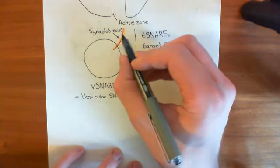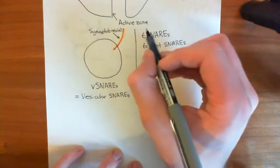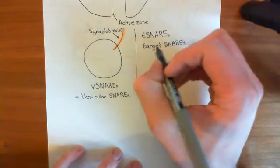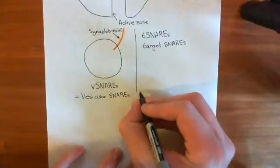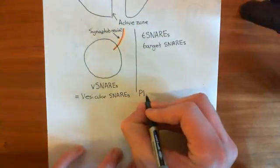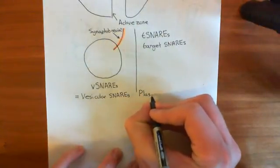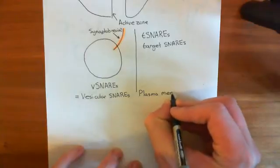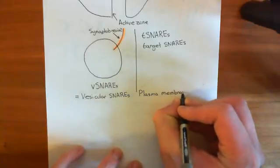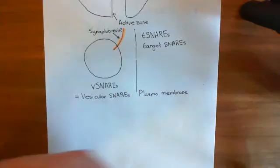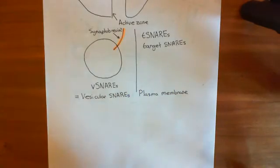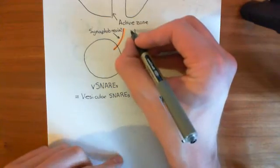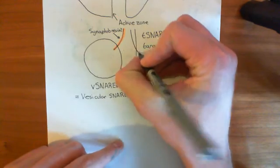This is the V-SNARE that is going to form a complex with the SNAREs on the plasma membrane — these so-called T-SNAREs. I should label this up as the plasma membrane down here. So what are the T-SNAREs? What are these proteins that are in the plasma membrane?